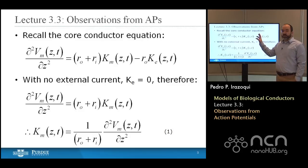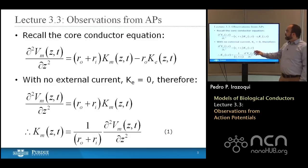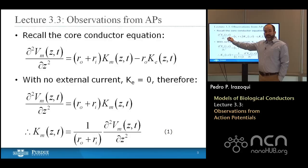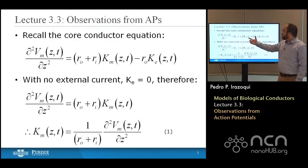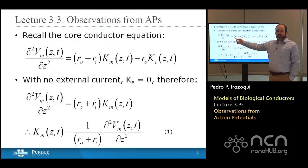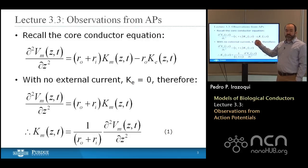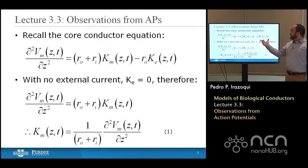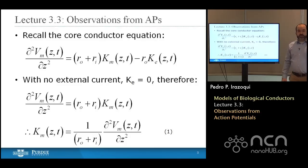Let's go back to the core conductor equation derived at the end of the last lecture. The core conductor equation relates the second derivative with respect to distance of the membrane voltage — which is a function of both space and time — to the sum of the impedance per unit length outside the cell and the impedance per unit length inside the cell, multiplied times the membrane current per unit length Km, plus an additional term: the product of the impedance outside the cell and the membrane current added by an external electrode, for example by a stimulus pulse Ke, as a function of Z and T.